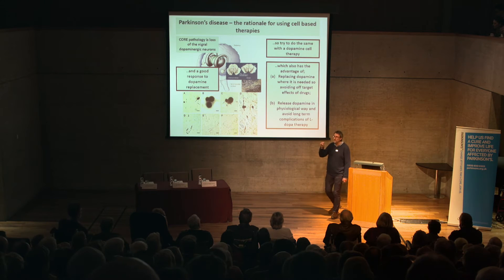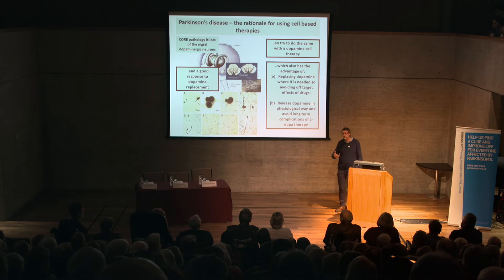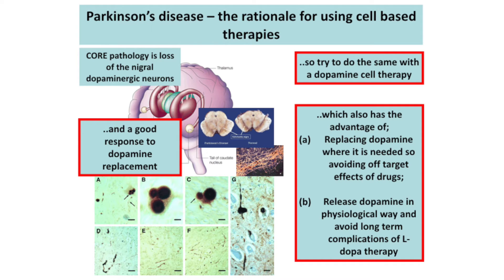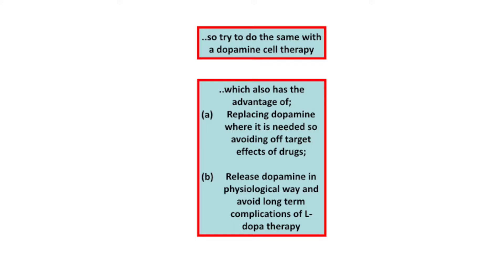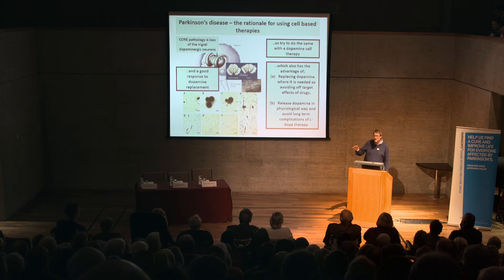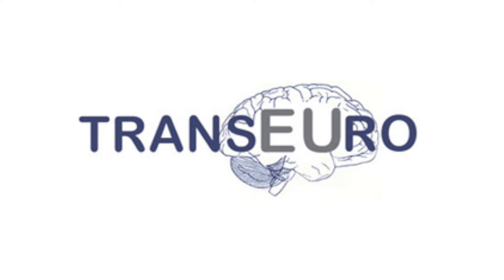The second advantage is that if I put dopamine back in the form of a nerve cell, that nerve cell will release dopamine just like a normal nerve cell. When you take a tablet it's absorbed through the gut into the brain and is not released the way dopamine is normally released. After a number of years the tablets start to behave erratically, and people develop the involuntary movements — so-called L-dopa induced dyskinesias — which you see in people on long-term therapy. That would be avoided by cell-based therapy.